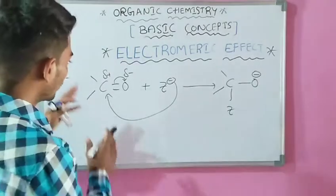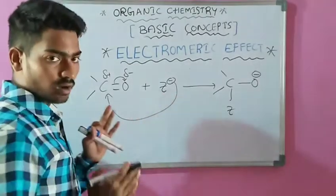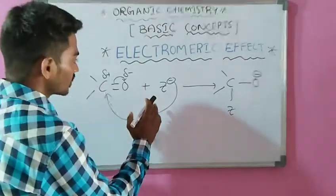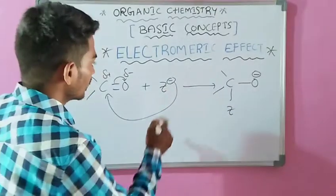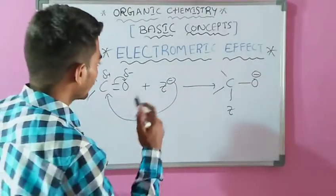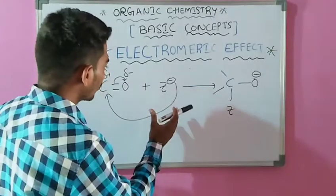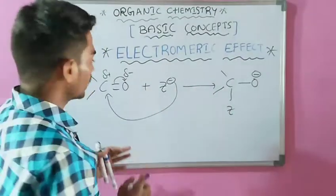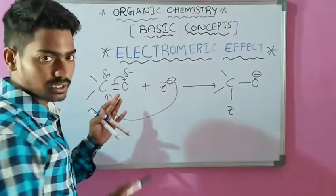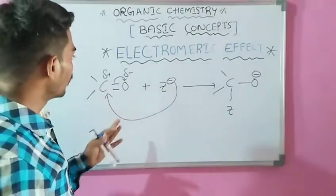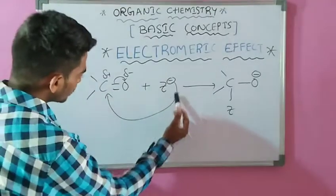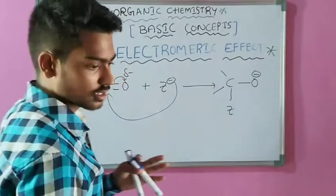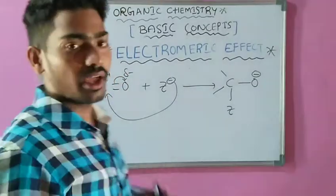We can take again a carbonyl compound, that is a double bond containing compound, which is treated with an attacking reagent — that attacking reagent is a nucleophile. Whenever this nucleophile comes closer to this carbonyl compound, charge dispersion takes place at the multiple bond. The minus charge attacking meets the positive charge, then it forms this type of reaction. This is the Electromeric effect.